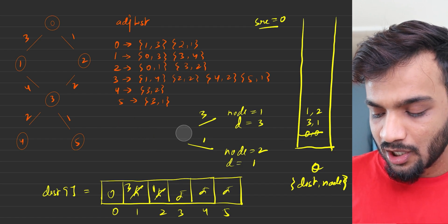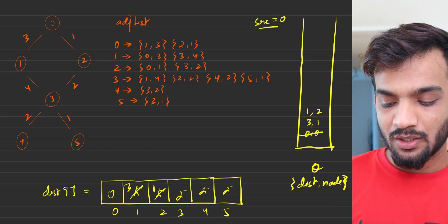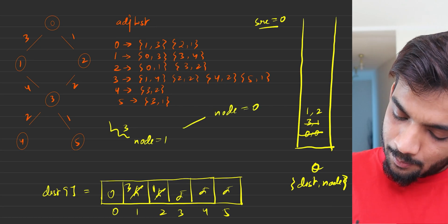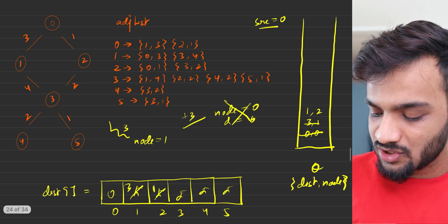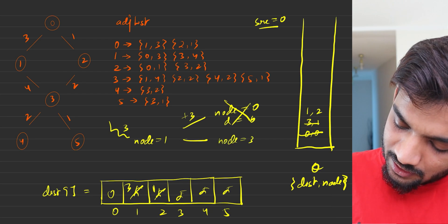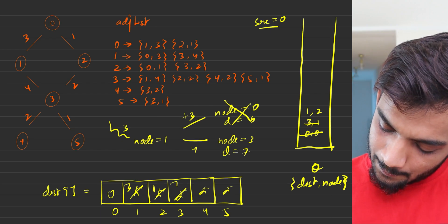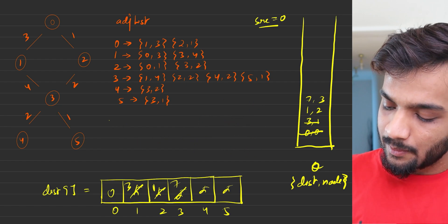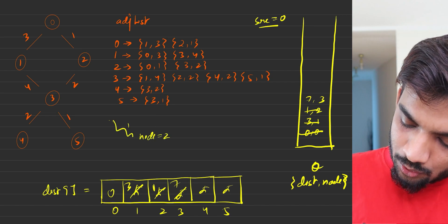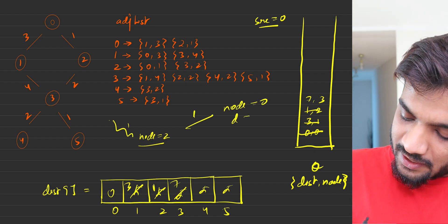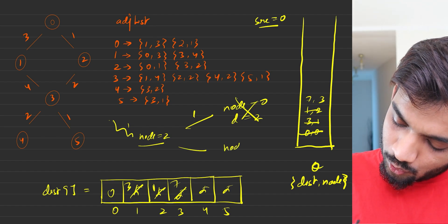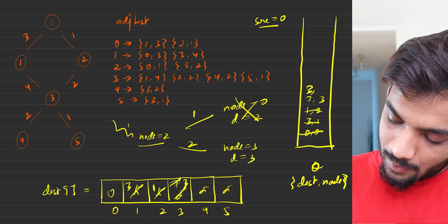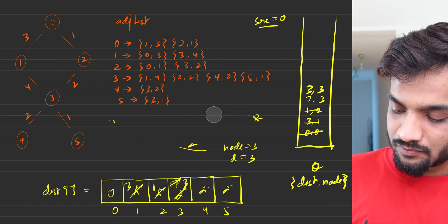Remember, this is a regular queue, not a priority queue. The next element dequeued has distance three and node one. Node one can go to node zero with distance three, making it six — not considered. Node one can also go to node three with distance four, making a total of seven — update seven and enqueue seven-comma-three. Next element is one-comma-two. Node two can go to node zero with distance one, making it two — not considered. Node two can go to node three with distance two, making a total of three — a better distance, so update and enqueue three-comma-three.